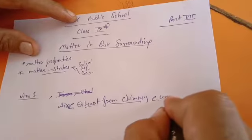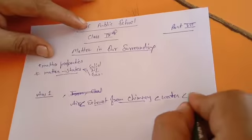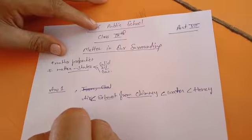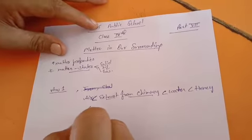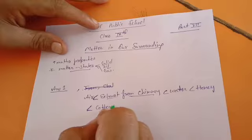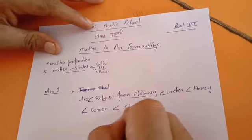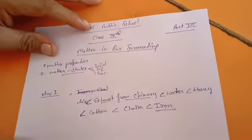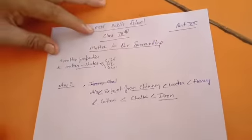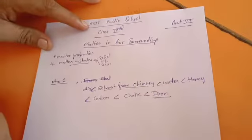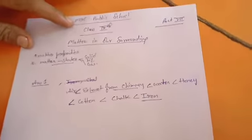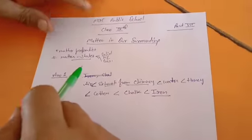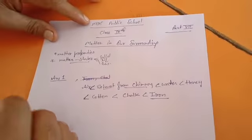Comparing honey and water: water has lesser mass than honey, so honey has more density. The remaining three are solids — among them, the lowest mass is possessed by cotton, next by chalk, and the highest by iron. So iron has the highest density. The exact increasing order is: air, exhaust from chimneys, water, honey, cotton, chalk, iron. For decreasing density, the order is simply reversed.